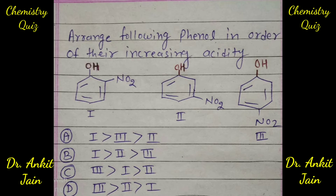In the third structure, you can see this is paranitrophenol, which has both a resonance effect and an inductive effect. So it will be the most acidic in nature due to its resonance effect and inductive effect. Therefore, the third (paranitrophenol) will be more acidic than the second and the first.